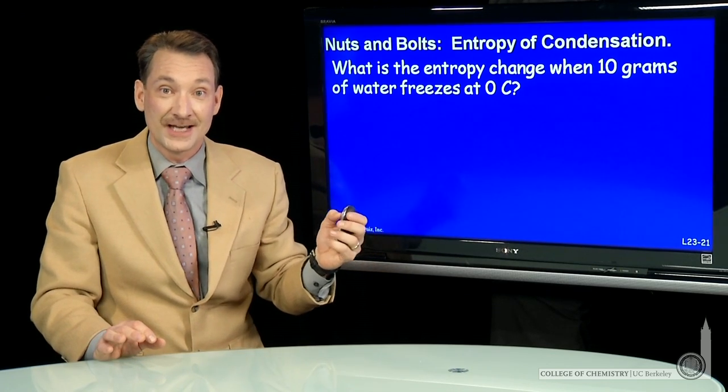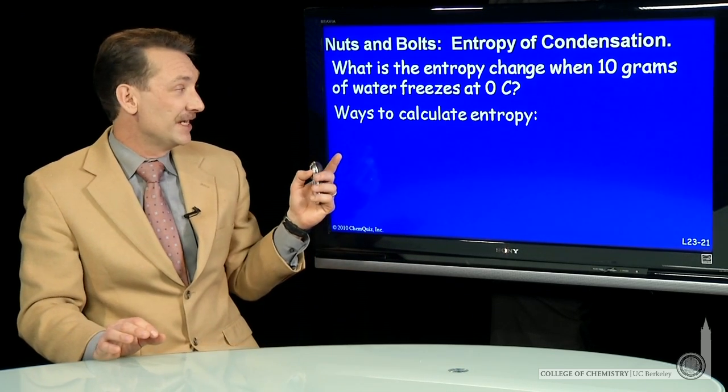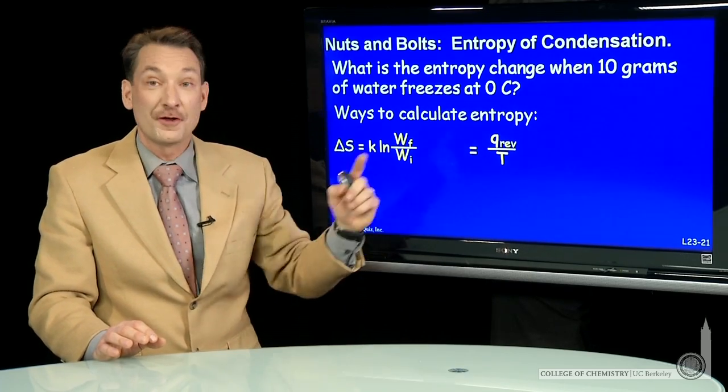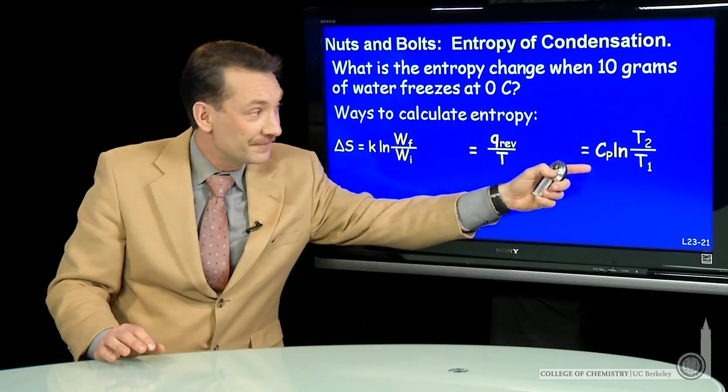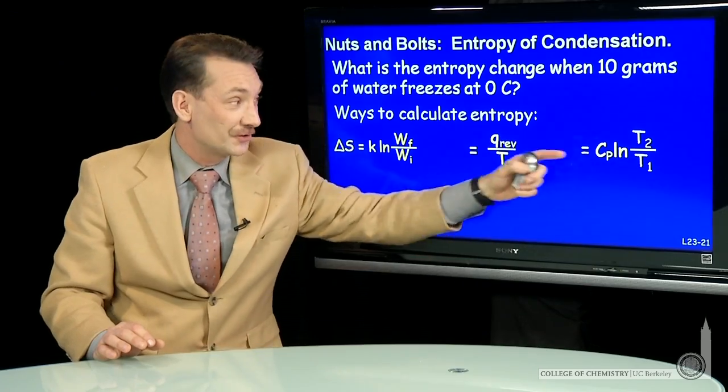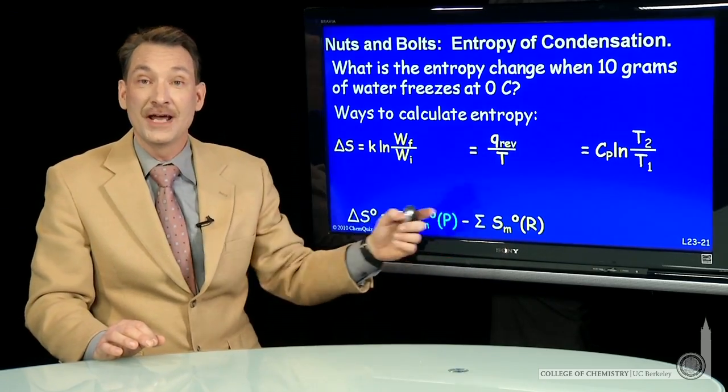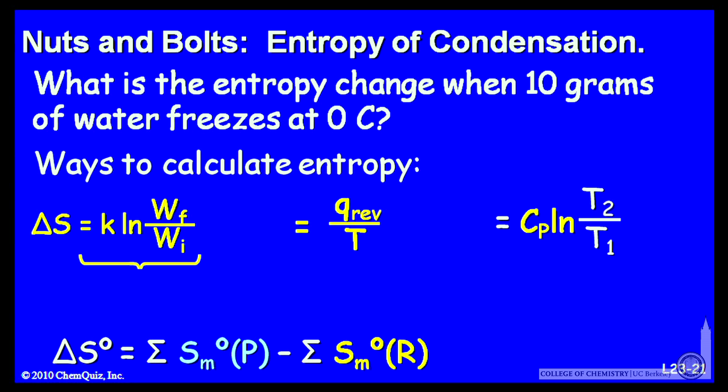Well, we know there's various ways to calculate entropy changes. We've seen the statistical method. We've seen the thermodynamic method. If there's a temperature change, also a thermodynamic method, and using molar entropies. So if we can count the microstates, we can use this method. But it's often difficult in any real system to count the microstates. So the thermodynamic methods are often much better.